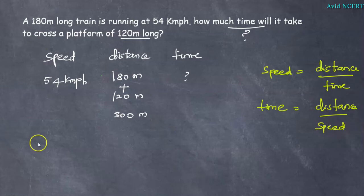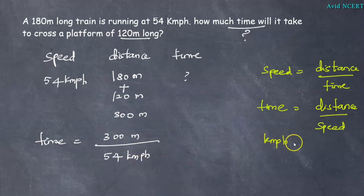So now substitute the values here, where time equals 300 meter by 54 km per hour. Since the units are different, that is this is in meter and this is in kilometer, we have to convert kilometer per hour into meter per second. To convert kilometer per hour to meter per second, we have to multiply the value by 5 by 18.